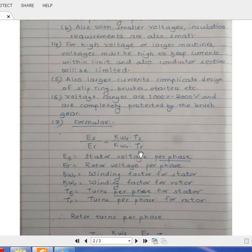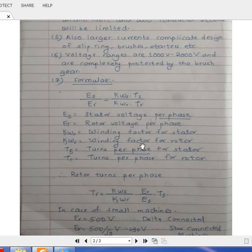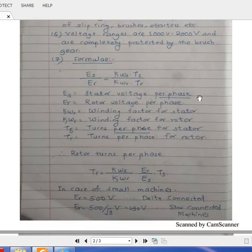Let us move to some mathematics related with rotor turns. As you are aware, ES by ER is nothing but KWS - here there is addition for induction motors. You have to consider winding factor for stator and winding factor for rotor. The simple concept is voltage is directly proportional to turns. So ES by ER is KWS into TS divided by KWR into TR.